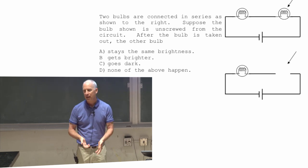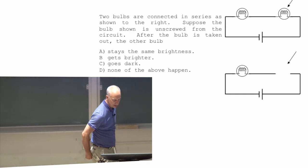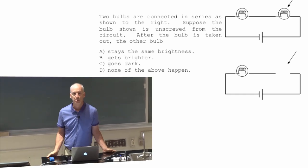But if the current goes up, it'll be brighter. If the current goes down, it'll be less bright. If there's no current, it'll just be a dark bulb.